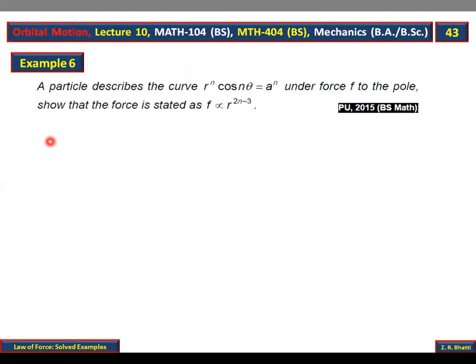Example number 6 mein hai: particle describes the curve r^n cos(n theta) is equal to a raised to n, under force f to the pole. Show that the force is stated as... Ab is mein automatically f proportional to r raised to (2n minus 3) ban jaayega.